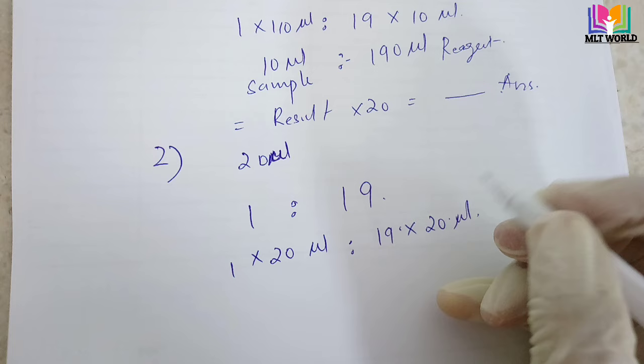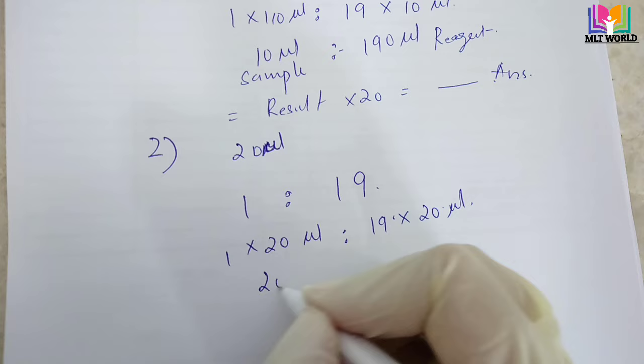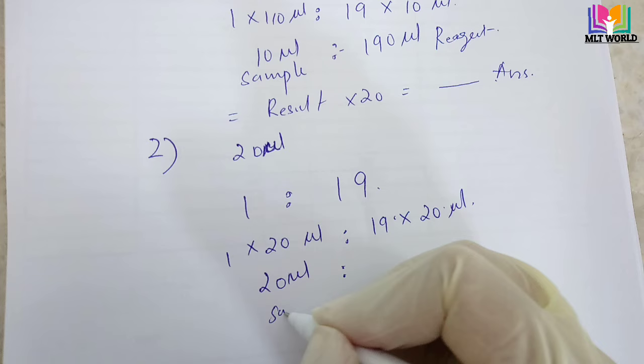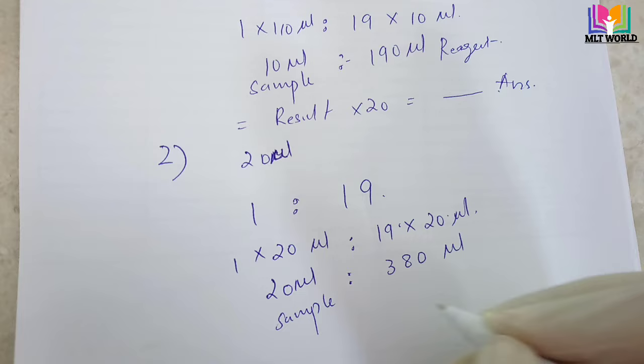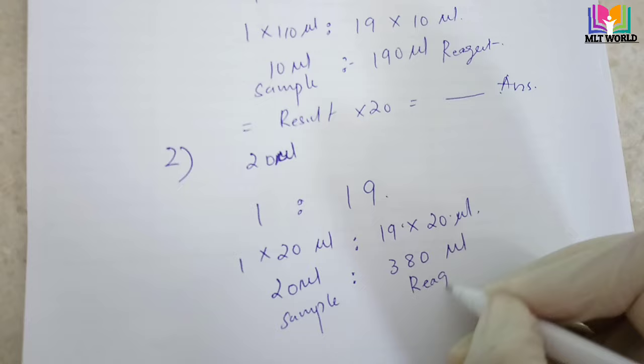So 1 x 20 microliters means we need 20 microliters of sample, and 19 x 20 microliters means we need 380 microliters of reagent. If you remember the WBC dilution, they say use 20 microliters and 380 — now you understand how this 380 and 20 is coming.